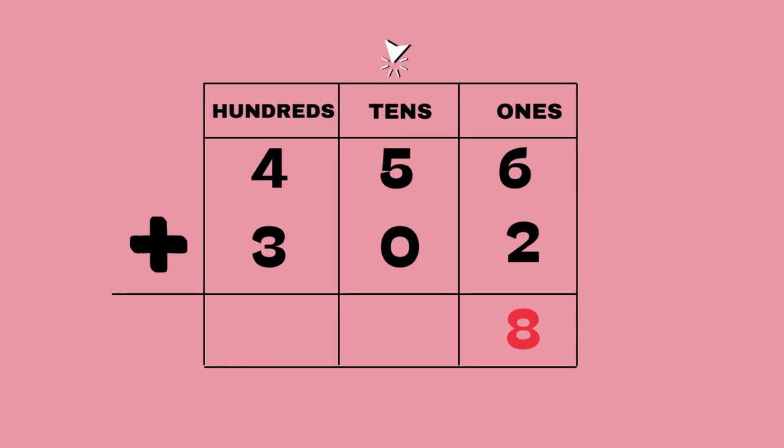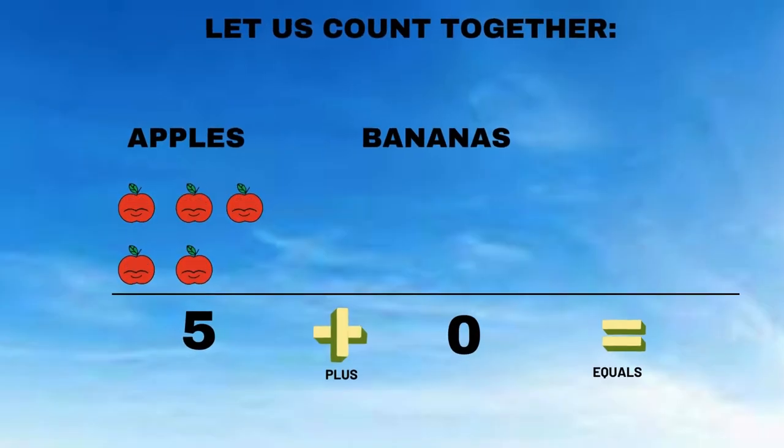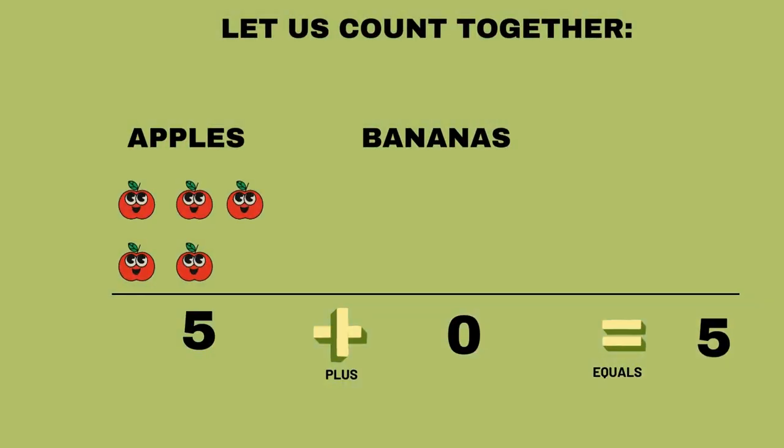Five apples plus zero bananas equals... let's count: one, two, three, four, five, plus zero. Zero means we have nothing to add, so we have just five fruits.